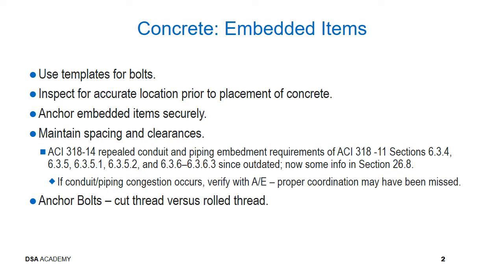ACI 318-14 repealed conduit and piping embedment requirements of ACI 318-11 section 6.3.4. The requirements are now in section 26.8 of ACI 318-14. The PI needs to make sure there is no conduit or piping congestion in the slab or wall.